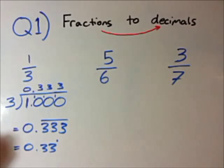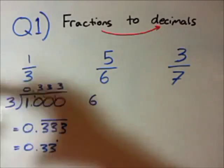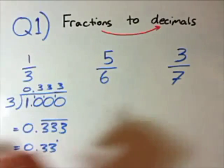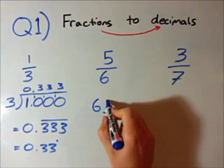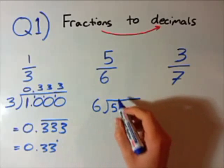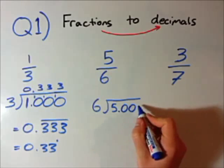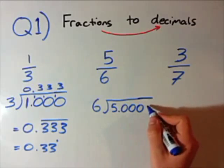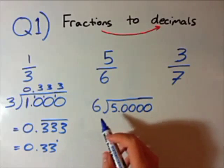Let's look at the second one. Same process. I'm going to write 6 and 5. I'll give a bit of room here. I'm going to write 5 as 5.000 — four zeros this time. You'll start to recognise these questions and learn to do this.